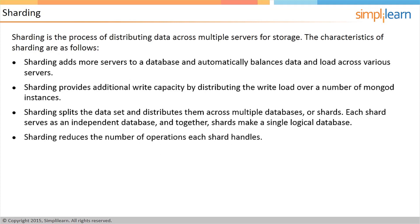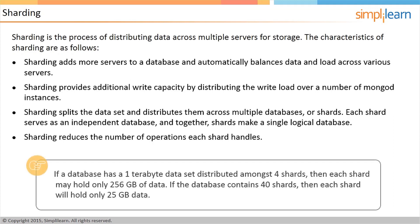Sharding reduces the number of operations each shard handles, and as a cluster grows, each shard handles fewer operations and stores less data. As a result, a cluster can increase its capacity and throughput horizontally. For example, to insert data into a particular record, the application needs to access only the shard that holds the record. If a database has a 1TB data set distributed amongst 4 shards, then each shard may hold only 256GB of data.